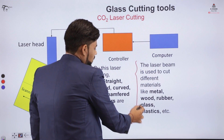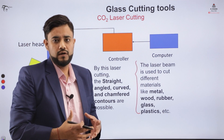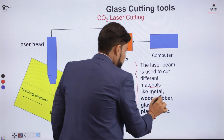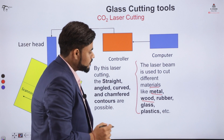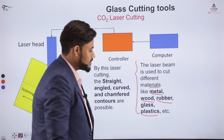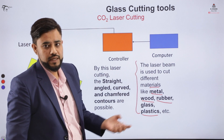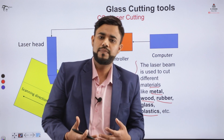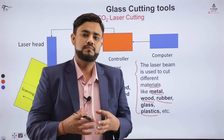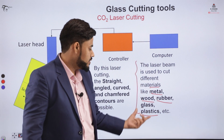This laser beam is not specific to cutting glass items. Rather, it is also used for cutting materials like wood, rubber, and plastics using the same heating technology. What happens is that the heat is provided to the particular section of the area that we want to cut, and after providing that heat to the surface, the removal of the plastic or glass is achieved.